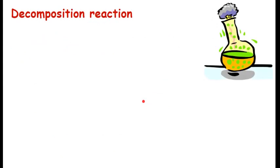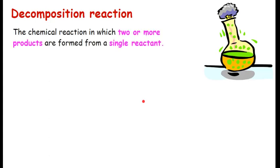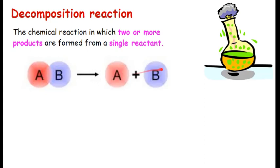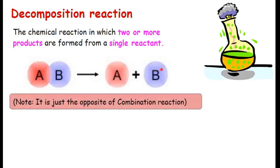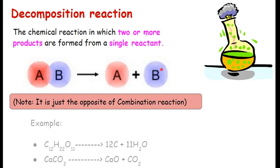Moving on to the next one, it is called decomposition reaction. Decompose means something breaking, something splitting. So, the chemical reaction in which two or more products are formed from a single reactant. Meaning, there was only one reactant, which is breaking to give you two products. This is, if you notice, it is just the opposite of combination. In combination, two were joining to give one. Here one is breaking to give two. For example, this compound C12H22O11, which is sugar's formula, it is breaking to give you two things: 12 carbon and 11 molecules of water. CaCO3, calcium carbonate, is breaking to give you two products: CaO, which is calcium oxide and CO2, which is carbon dioxide. So, one reactant breaking to give two products, this is decomposition reaction.